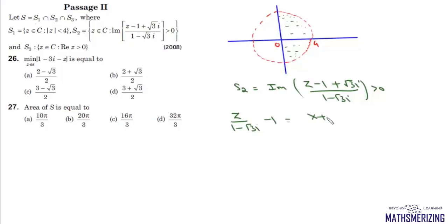We can write this as (x + iy)(1 + √3i)/4 minus 1. So its imaginary part will be (√3x + y)/4, and it is greater than 0. So this S2 represents all the points which satisfy this condition that √3x + y is greater than 0.